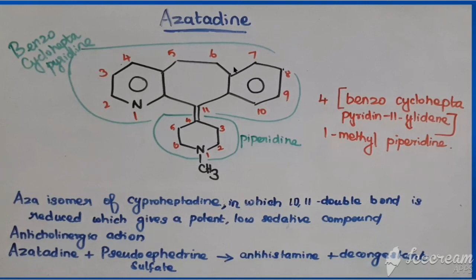The whole name: the benzocycloheptapyridine ring system would be attached to the fourth position of piperidine. So the chemical name is 4-(benzocycloheptapyridine-11-ylidene)-1-methylpiperidine.